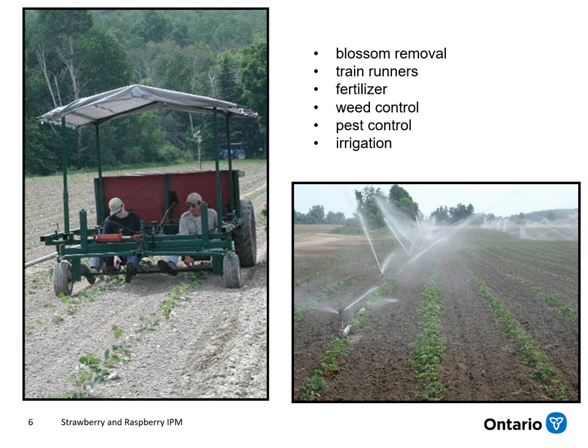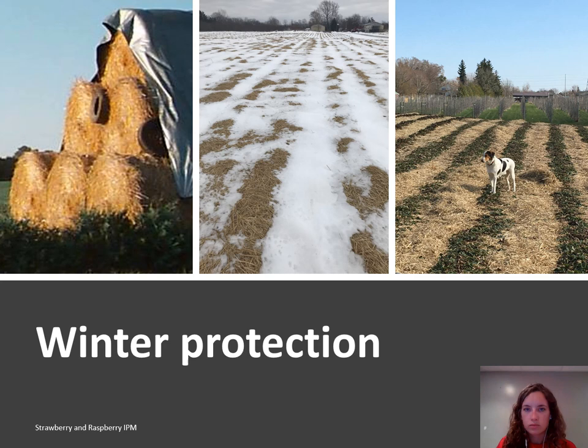In the first year the focus is on producing daughter plants and establishing the field, so any blossoms need to be removed so the energy goes towards runner development and plant establishment instead of fruiting, and runners need to be trained to stay in the row. Fertilizer will be applied and weeds and pests need to be controlled and monitored throughout that first season, and regular irrigation is important to ensure optimum growth. In the winter after that first year of establishment, strawberries are covered with straw for winter protection and removed in the spring. Straw also helps keep the fruit clean during harvest and helps with disease management.